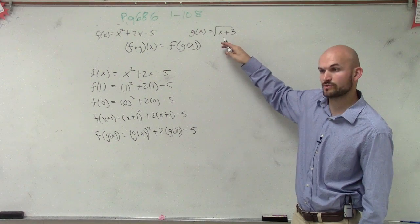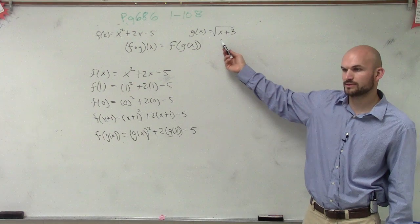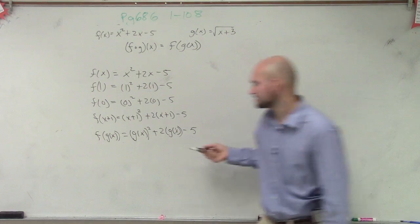Yeah, g of x equals the square root of x plus 3. So rather than writing g of x, I'm going to write the square root of x plus 3. Does that make sense? All right, so let's take a look at that.